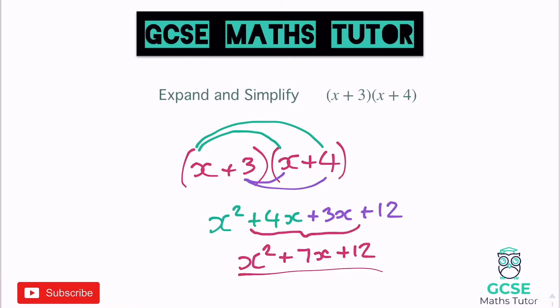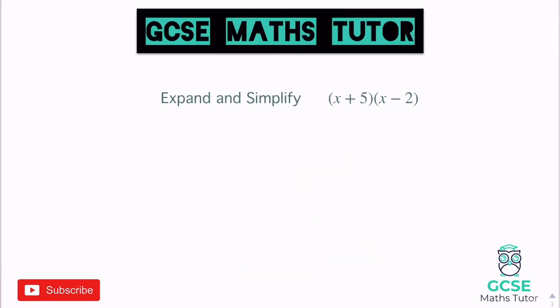That's the first one. Hopefully you've made some notes on that. Now let's have a look at some more. Expand and simplify this next one — we've got a negative in the second bracket, so we just need to be careful. We've got x plus 5 and x minus 2.